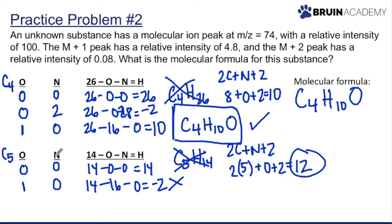So C4H10O is our final molecular formula. It's a process of elimination and trial and error to figure out what molecular formula you have. Keep in mind that mass spectrometry is usually done alongside other techniques like IR and NMR, which together provide data for identifying the actual molecule.